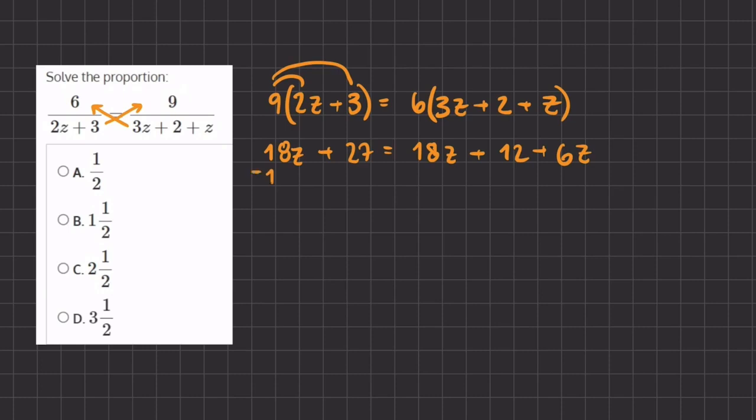So we're going to subtract 18z from this side and it's going to cancel, and we're going to move this 12 to the other side. Now we are left with 15 on this side and 0z here, and we're left with 6z on this side.